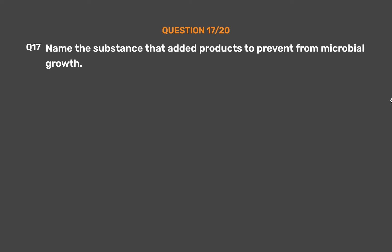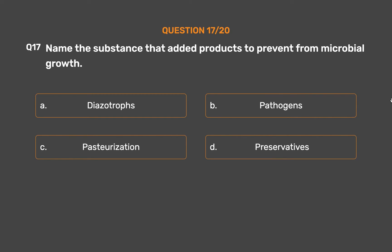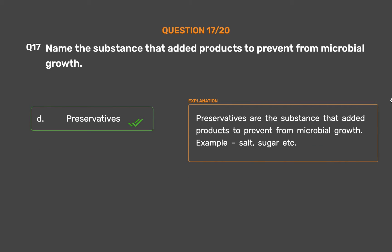Question number 17. Name the substance added to products to prevent microbial growth. Option A: Diazotrophs. Option B: Pathogens. Option C: Pasteurization. Option D: Preservatives. The correct answer is Option D, Preservatives. Preservatives are substances added to products to prevent microbial growth. Examples include salt, sugar, etc.